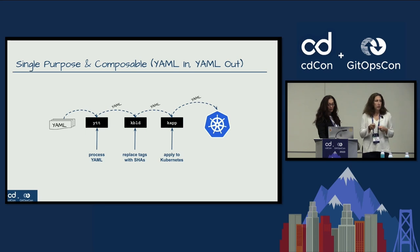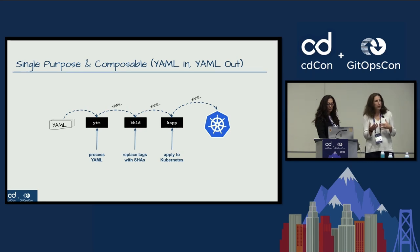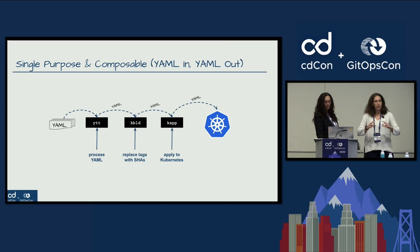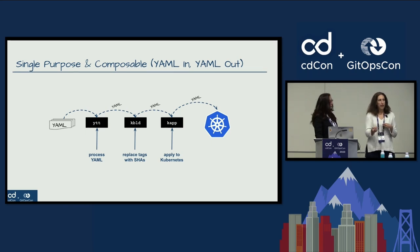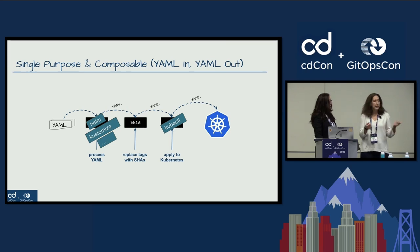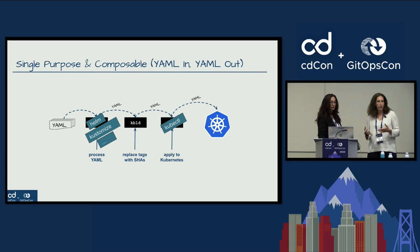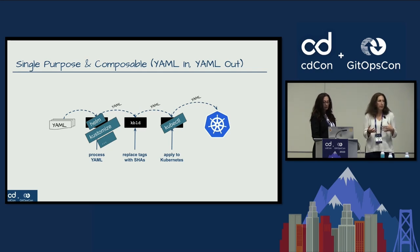KBuild is a tool specifically to look for images in your YAML, replace those with SHAs, and produce the bill of materials that we're looking for - usable as a lock file as well as for information purposes. There's also a tool to apply to Kubernetes, similar to kubectl, but it takes a set of resources you're applying together and gives you a way to control them as a whole as an application - so you can delete them all at once. All of these tools are composable into a workflow because they ingest YAML and emit YAML, making them interoperable with any other tool of your choice.